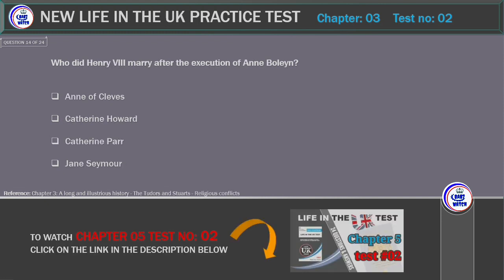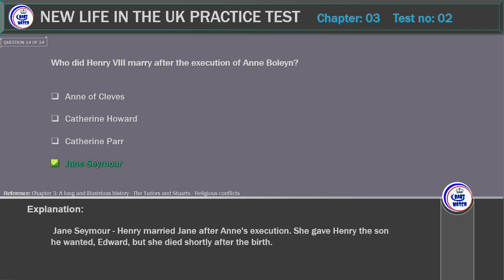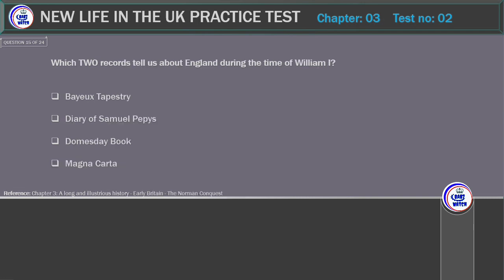Who did Henry VIII marry after the execution of Anne Boleyn? Options: Anne of Cleves, Catherine Howard, Catherine Parr, Jane Seymour. Correct answer: Jane Seymour. Explanation: Henry married Jane after Anne's execution. She gave Henry the son he wanted, Edward, but she died shortly after the birth.